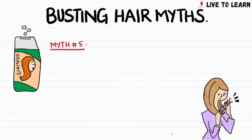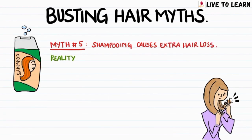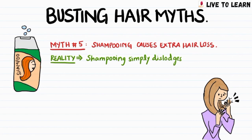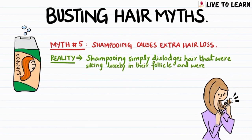The fifth myth is that shampooing causes extra hair loss. This is incorrect. Shampooing simply dislodges hair that were sitting loosely in their hair follicle and were ready to fall out. It's normal to lose up to 50–100 hair strands a day.